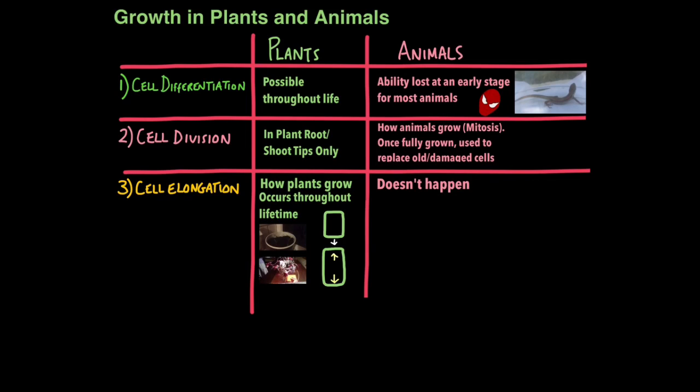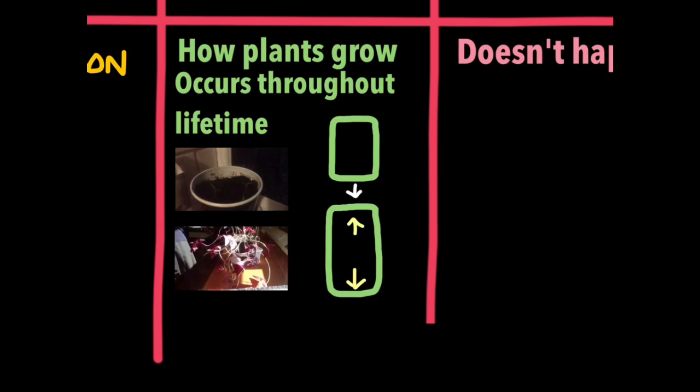Cell elongation is how plants grow. Remember the tutorial on auxins and phototropisms? I've shown you how auxins bring about a stretching of plant cells, causing them to elongate. Now, you can see plants growing in this video here through that process, through cell elongation. And that happens throughout their lifetime, unlike animals who stop growing after a certain point.